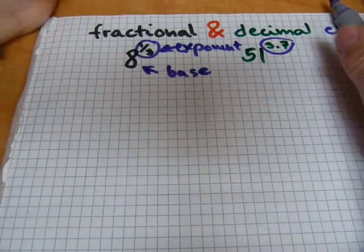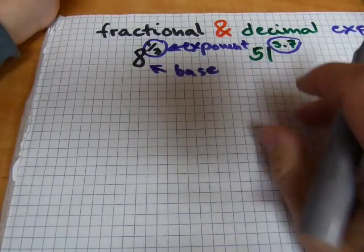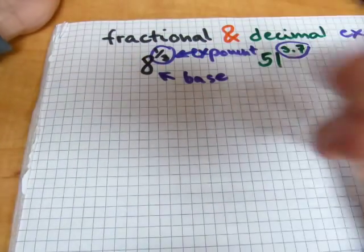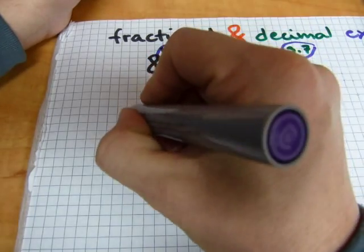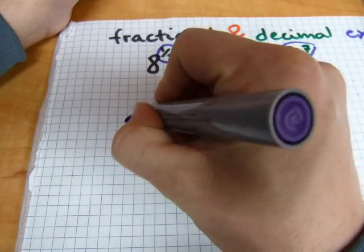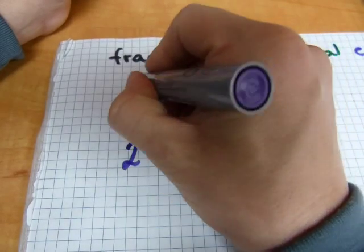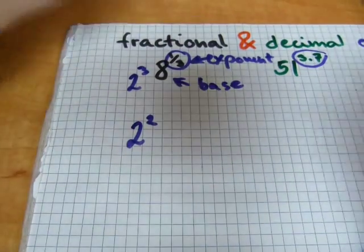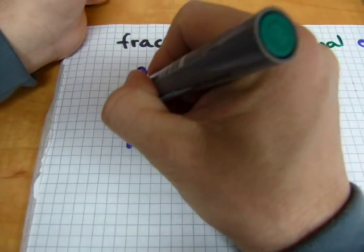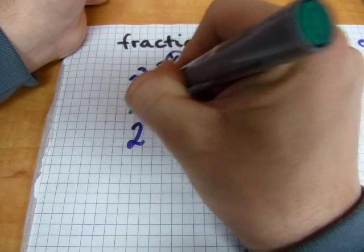I'm going to pick another base so we can visualize some of these numbers. For example, 2 to the power of 2 and 2 to the power of 3. Somewhere halfway between them here is 2 to the power of 2.5.